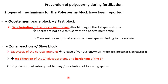There are two types of mechanisms involved in the block of polyspermy. The first is the oocyte membrane block, caused by the oocyte membrane itself, called the fast block. The second is a block of polyspermy caused by the zona pellucida and by the reaction of the zona pellucida.